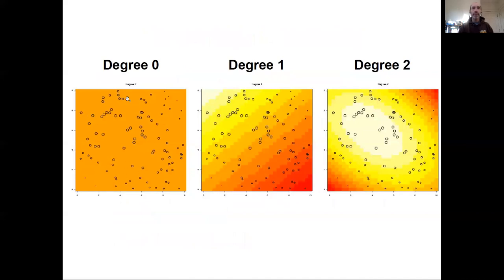Here is that same geospatial dataset we had before. Here we're fitting a zeroth degree polynomial, so just fitting the constant mean to it.